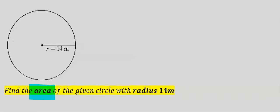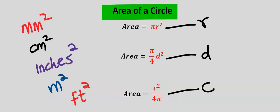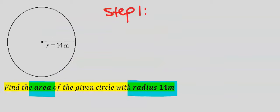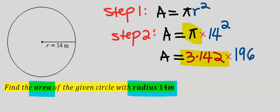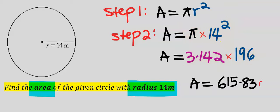Let's find the area of the given circle with radius 14 meters. For the area of a circle with a given radius we're going to use pi r squared. Step one: write out the formula, which is pi r squared. Next, substitute: pi is taken as 3.142, and 14 squared is 196. The area is 615.83 meters squared to two decimal places and five significant figures.